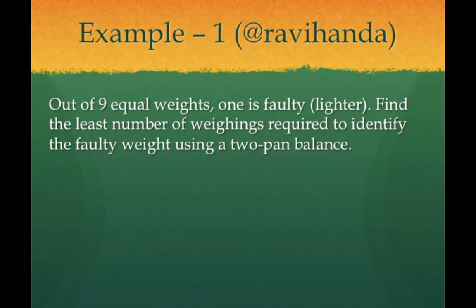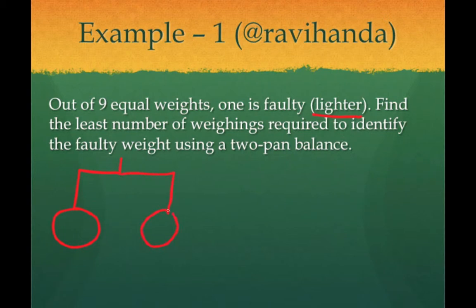Here is the kind of question which gets asked in case of a pan balance: out of nine equal weights, one is faulty, which essentially means eight are equal and one is lighter than the other eight. Find the least number of weighings required to identify the faulty weight using a two pan balance. I would request you to pause the video here, try it out for a couple of minutes, and if you are not able to solve it then look at the solution.